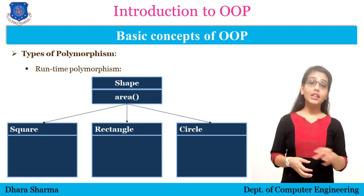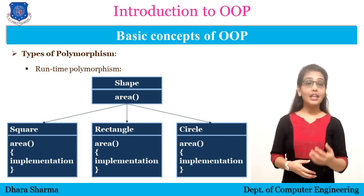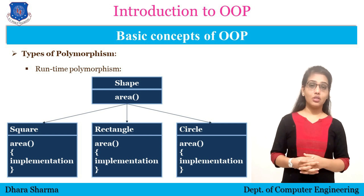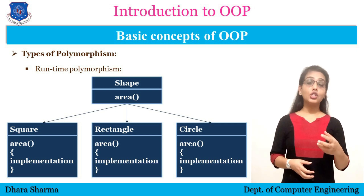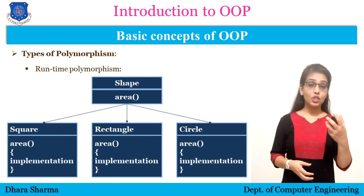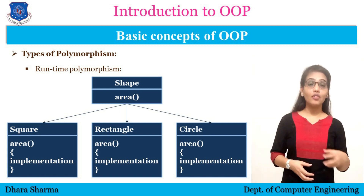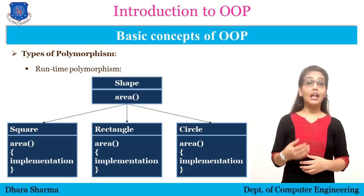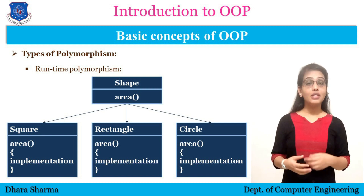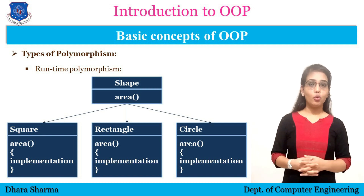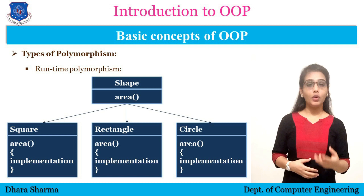Suppose the area function is defined in the Shape class — it will be inherited into all the derived classes. And suppose all the derived classes are already having their own area functions. So whenever the area function from the Shape class is inherited into the derived class, there will be two functions of similar type, and at that time the function will be overwritten.